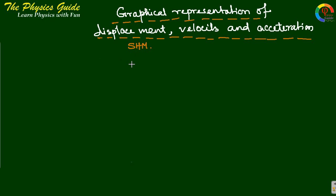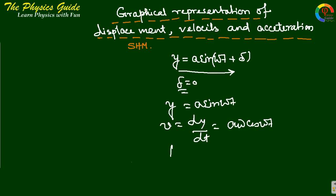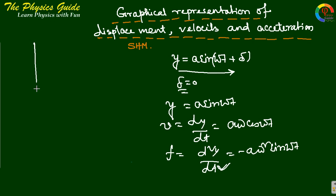We can graphically represent the displacement, velocity, and acceleration of simple harmonic oscillation. We know y equals A sine(ωt + δ) is the equation for displacement. If δ equals zero, then y equals A sine(ωt). Velocity is dy/dt equals Aω cos(ωt), and acceleration is d²y/dt² equals minus Aω² sine(ωt).